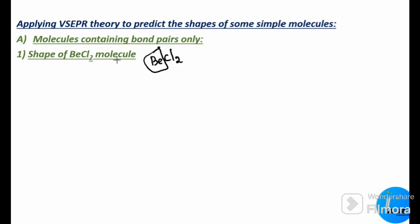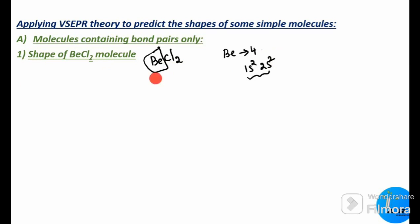The central beryllium atom has atomic number 4, and its electronic configuration is 1s² 2s². So this central beryllium atom in BeCl₂ has two valence electrons.